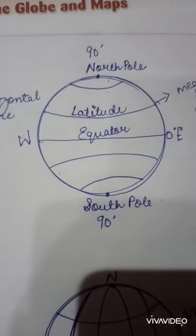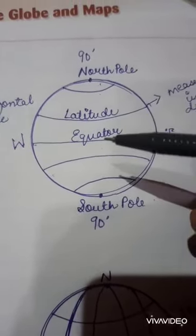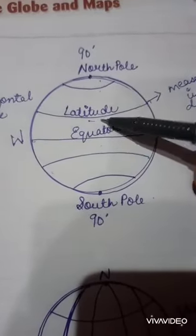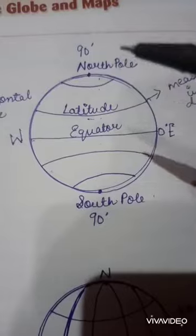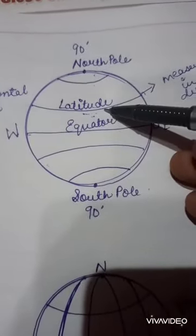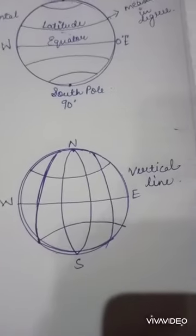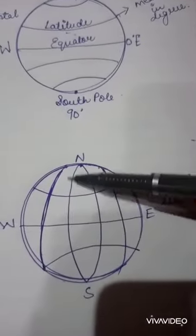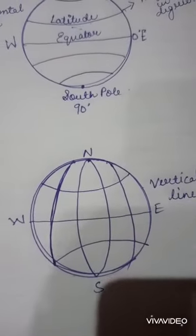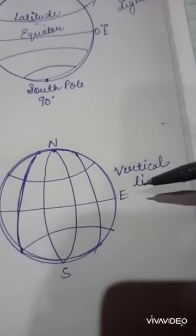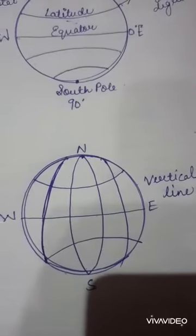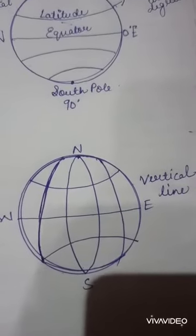Latitude and longitude are both measured in degrees — we will learn more about this further in this chapter and the next. For now, you have to know that latitudes are horizontal lines, whereas longitudes are vertical lines, as you can see here.